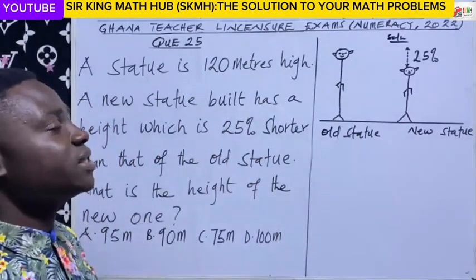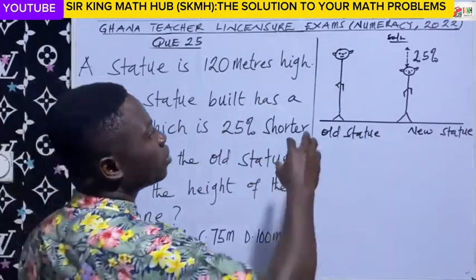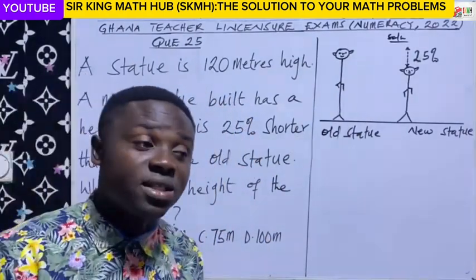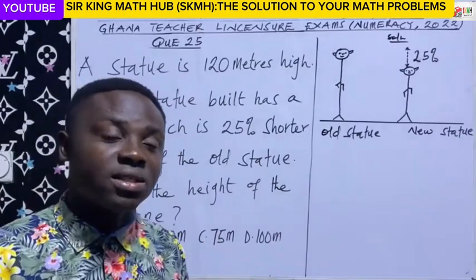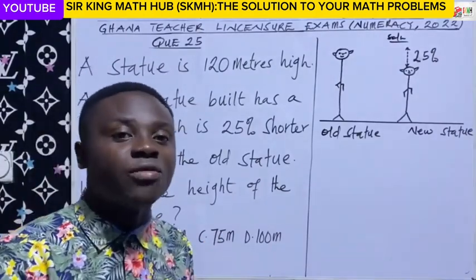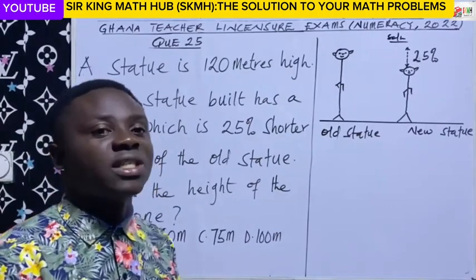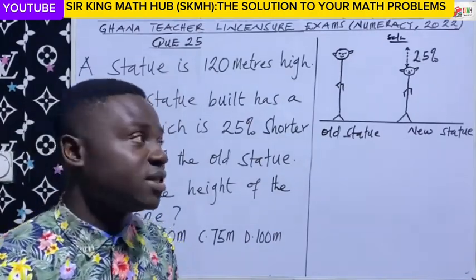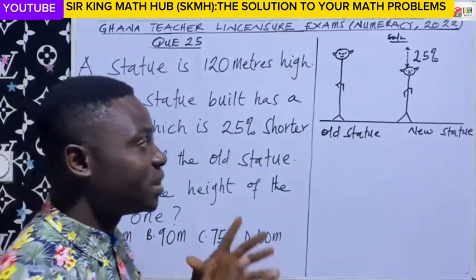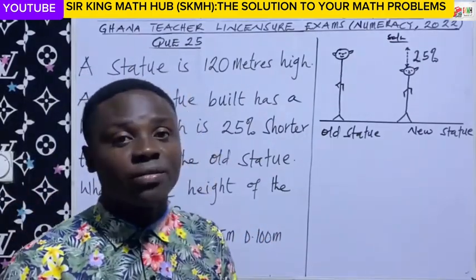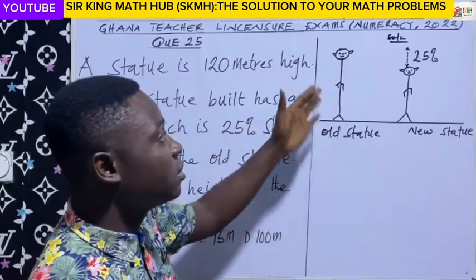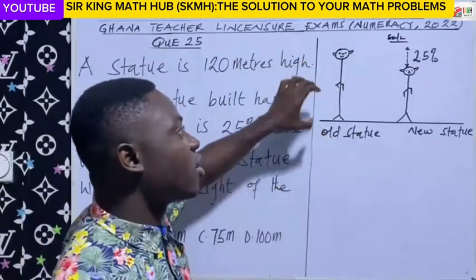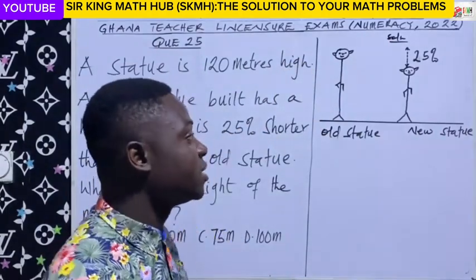So with this information, we know that this question is about percentages. In percentages, the original quantity is always equivalent to 100%. In this case, because the quantity is given in terms of height, the original height is equivalent to 100%.